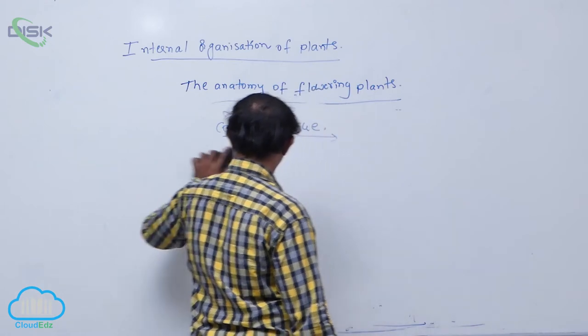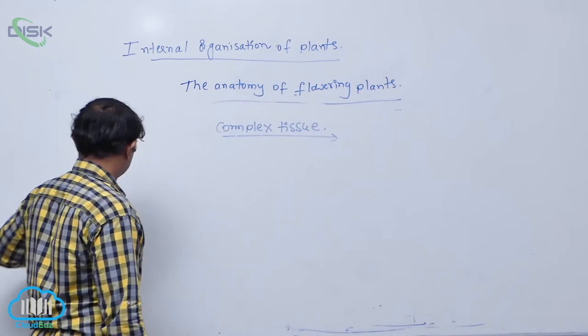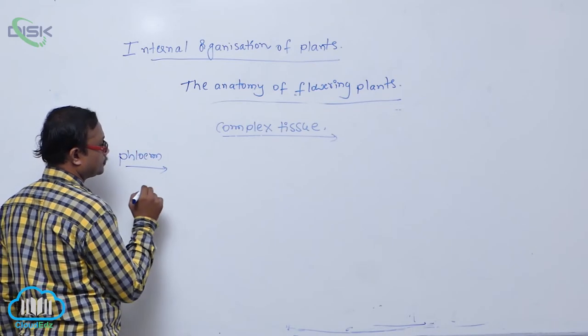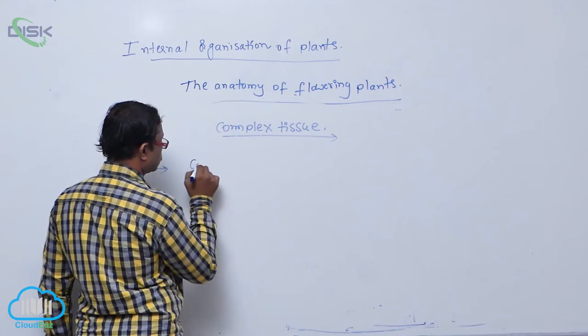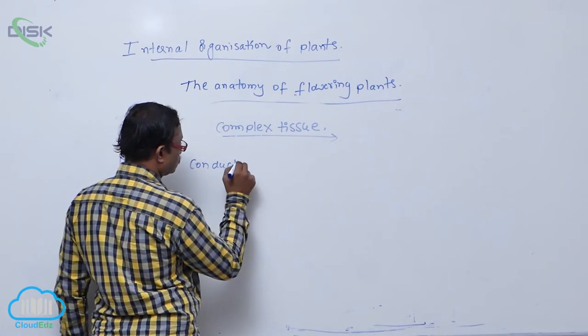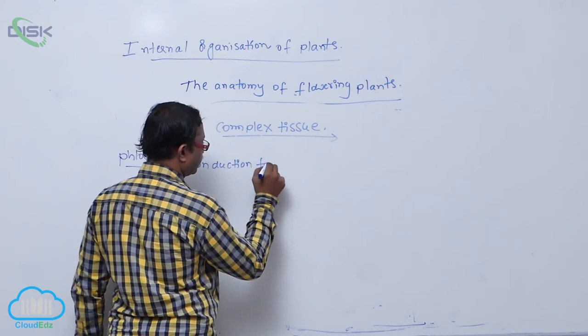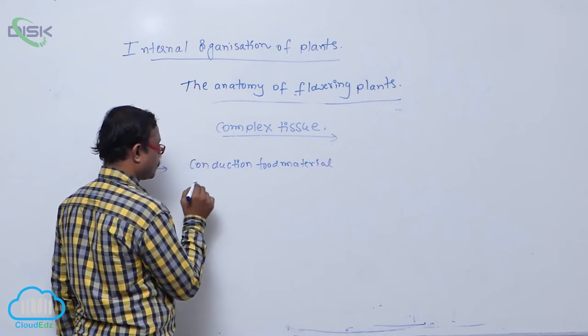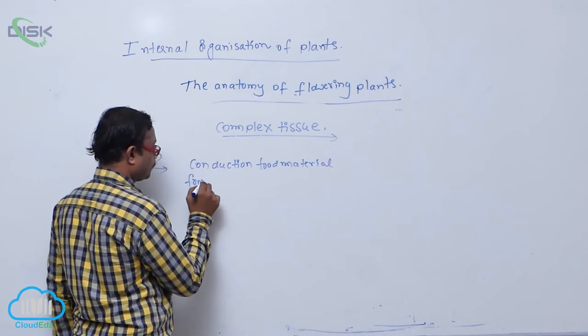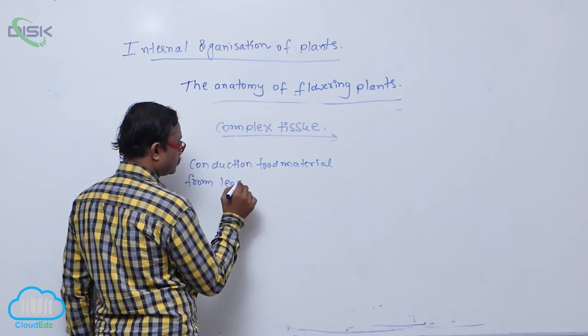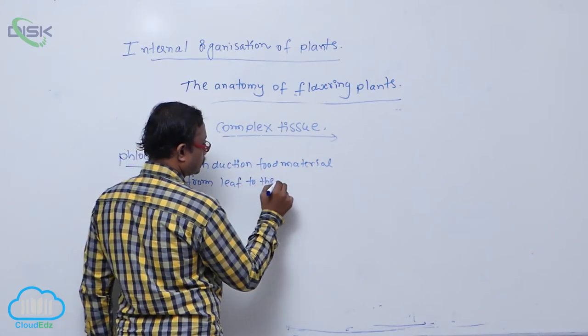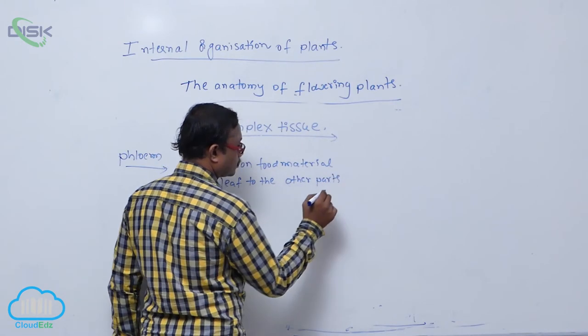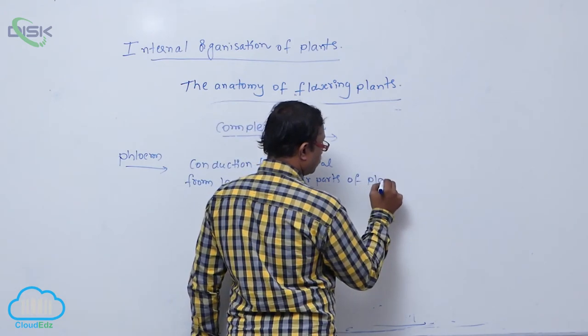After that, phloem. Phloem conduction of food material from leaf to the other parts of plant body.